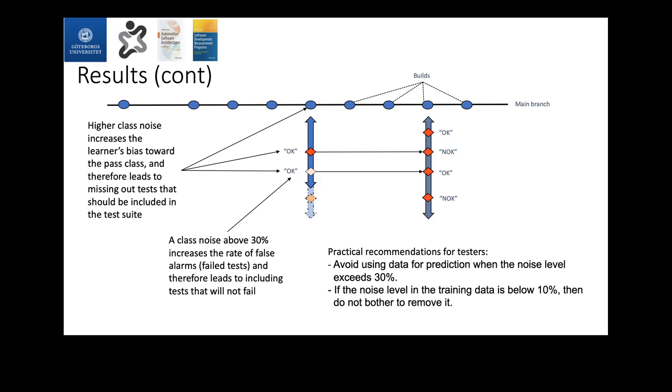What the result told us as well is that the higher class noise we have in the data, the more the learner got or became biased towards the pass class, which means that we will miss out test cases, we will be more optimistic about whether test cases will pass or not. It will say that they will pass, and then if we exclude those passing tests, we will end up missing out tests in the suite which are important to reveal faults. And also when class noise went above 30 percent, then there will be more false alarms about failed tests. So it will be more pessimistic and therefore leads to including tests that will not fail.